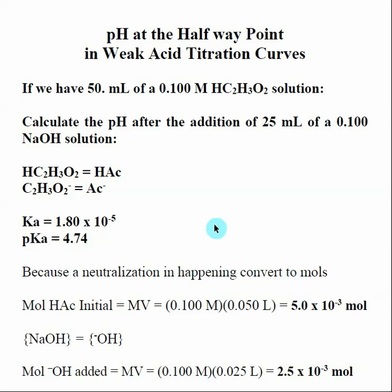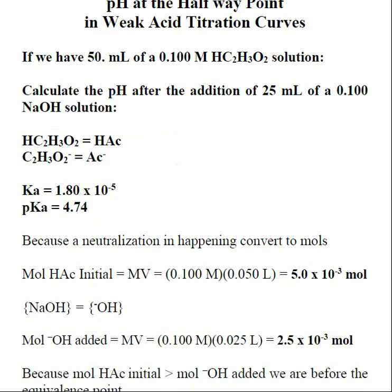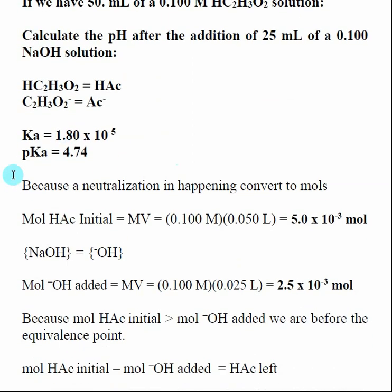We're starting with a given amount — 50 milliliters of 0.1 molar acetic acid — and now we're adding a certain amount of strong base to it. We still have the same Ka and pKa.